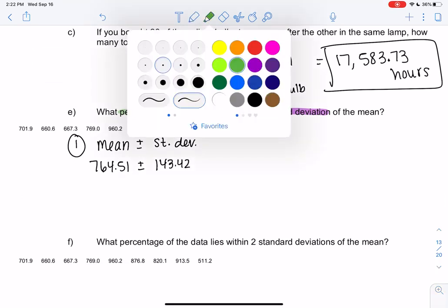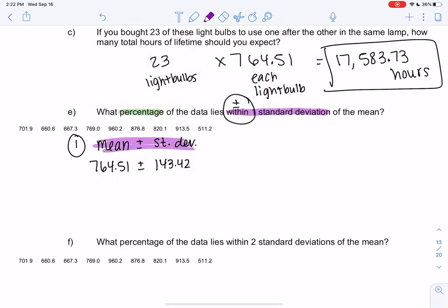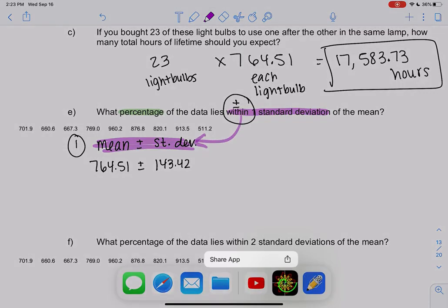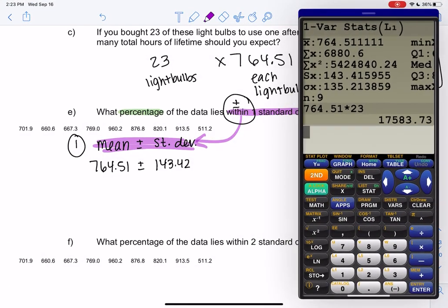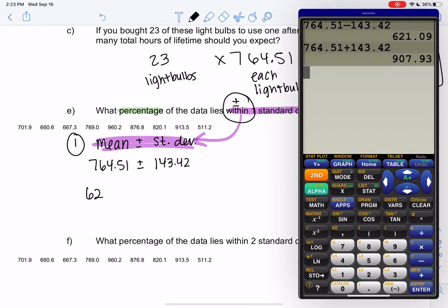So this is answering the purple part of the question. We'll come to the percentage after. So I will do 764.51, and I always do subtraction first just because that's the smaller number. So I'll subtract and add. So 621.09 to 907.93, and this gives me a range of numbers.